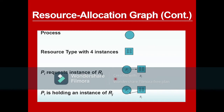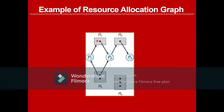Using this concept we can draw a resource allocation graph. In this example we have four resources: R1, R2, R3, and R4, and three processes: P1, P2, and P3. Processes are in circles and resources are in rectangles. Lines with arrows are called edges, and the black dots are resource instances.